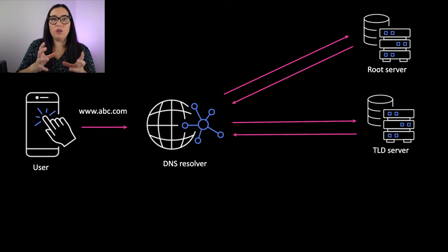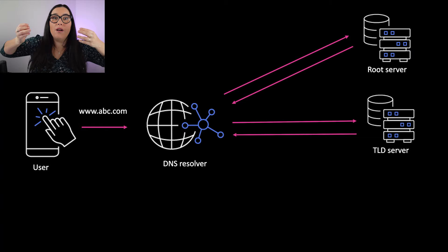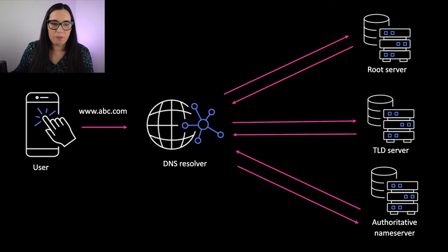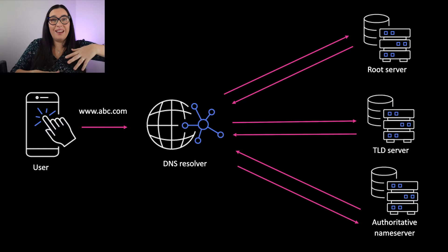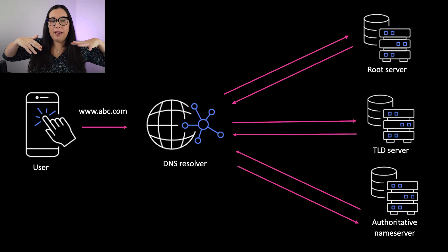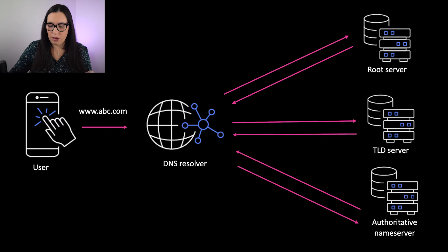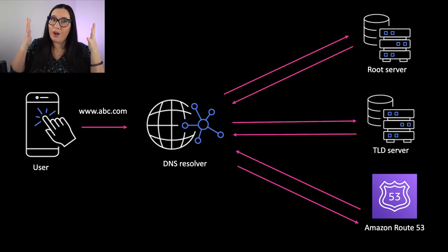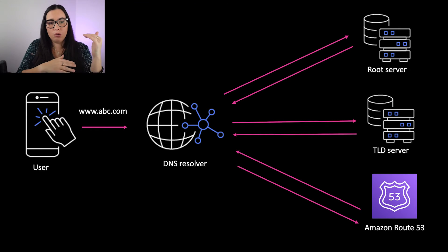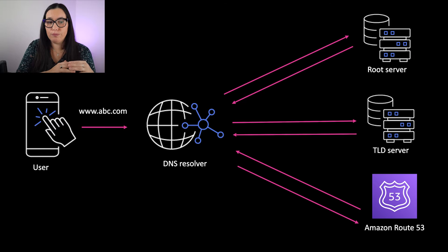The TLD server will know the domain based on avc.com. Since we are inside the TLD server, it will know what the authoritative name server is — this is usually the last step to get the IP address. It contains a list of domains and records, and it will know what to return based on www.avc.com. Route 53 is an authoritative resolver, so when you create a domain, you create a hosted zone where all the records are stored.